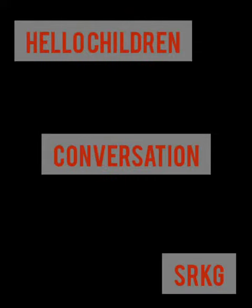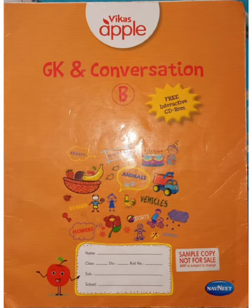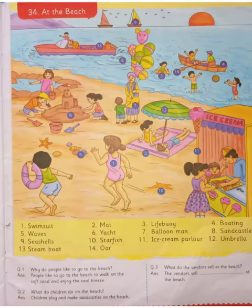Hello children, Senior KG. Conversation at the Beach. GK and Conversation, page number 37. Children, this is a picture of a beach. What things can we see at the beach?